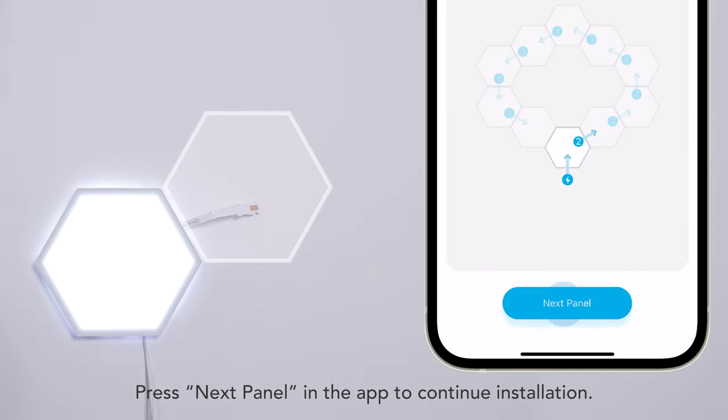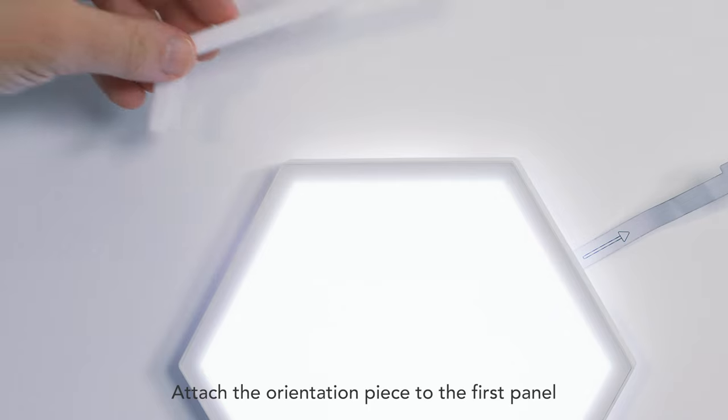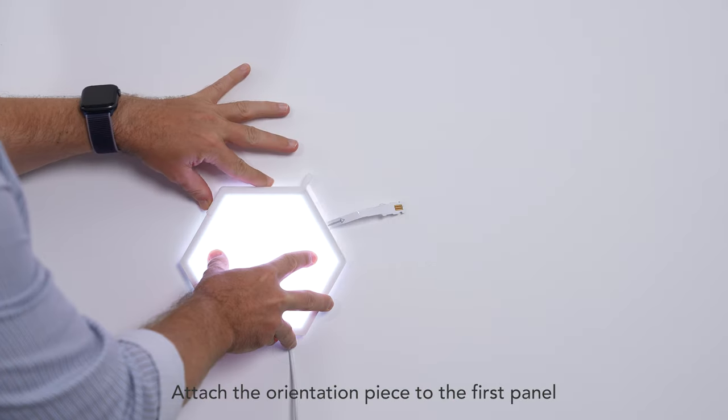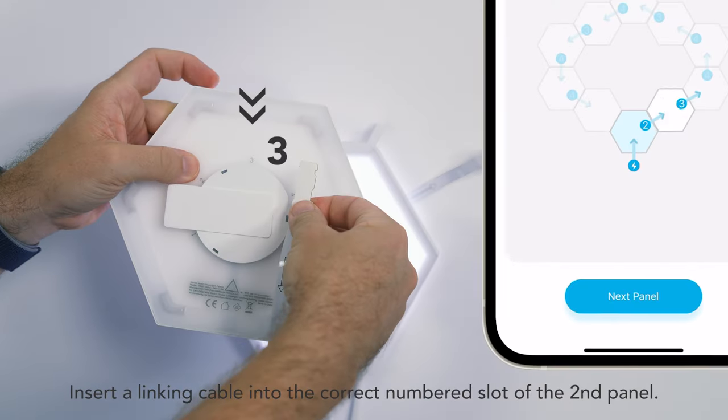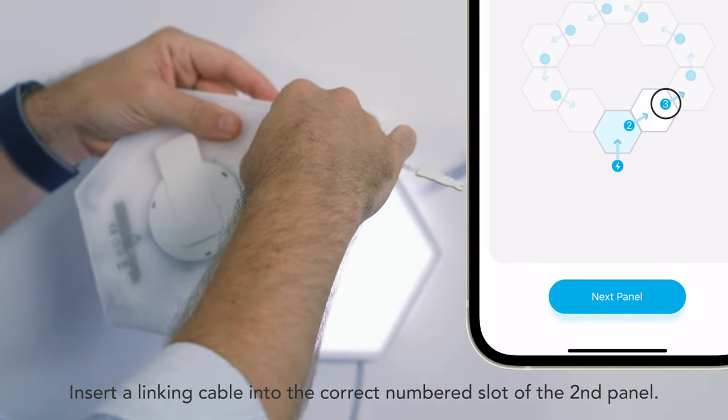Press Next panel in the app to continue installation. Attach the orientation piece to the first panel to help line up the second panel correctly. Insert a linking cable into the correct numbered slot of the second panel.